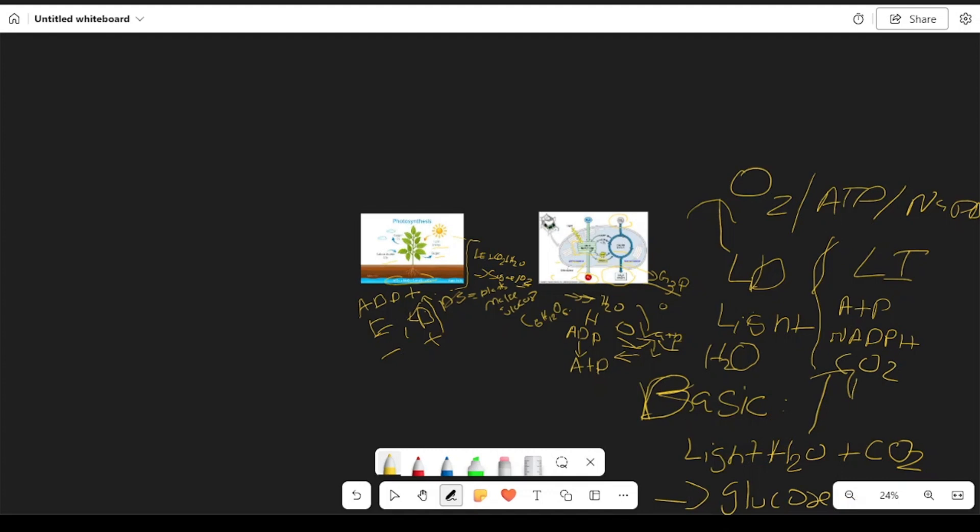In the light independent reaction, there is ATP, NADPH, and carbon dioxide. What does this produce? G3P, or for the basics, glucose. That's the basic overview of this video. I hope you guys learned something new. I hope you have a good day. I'll catch you guys later.